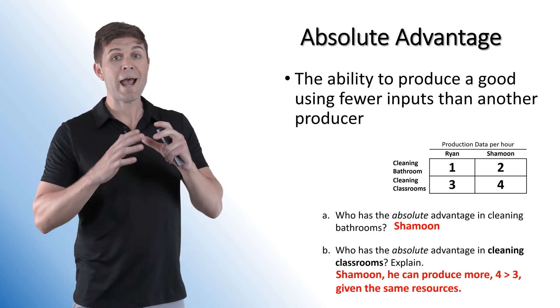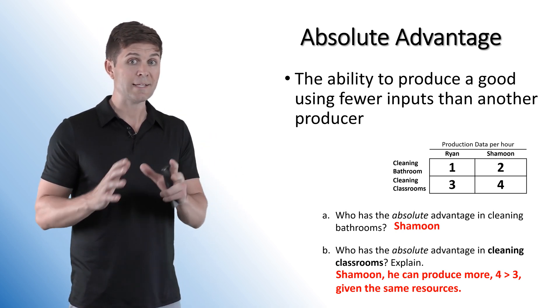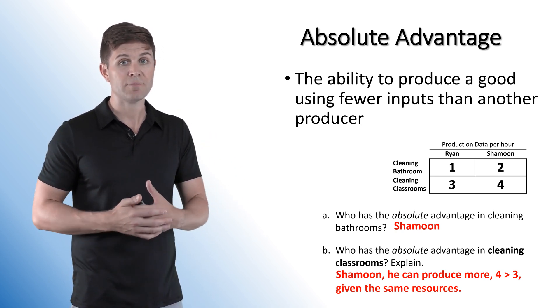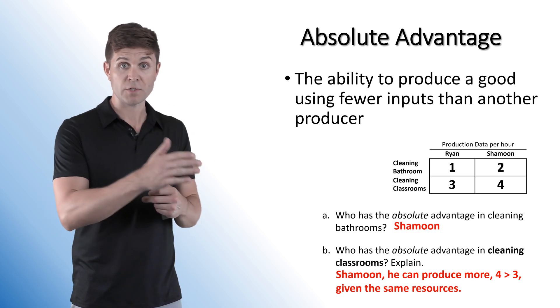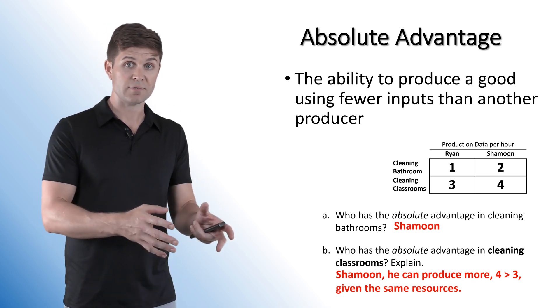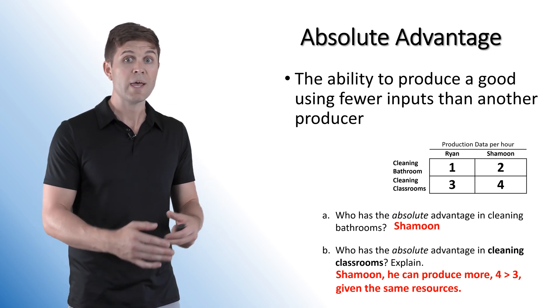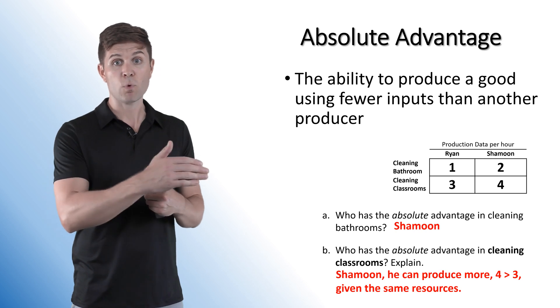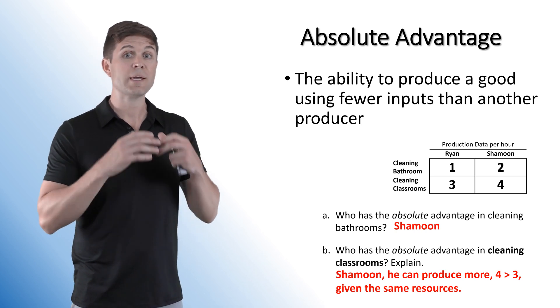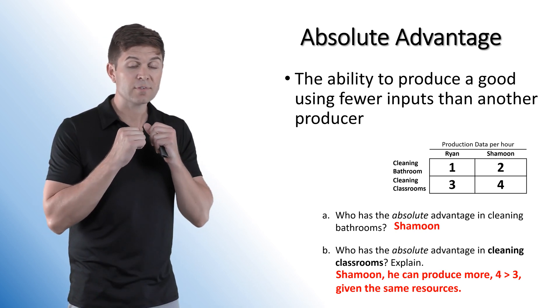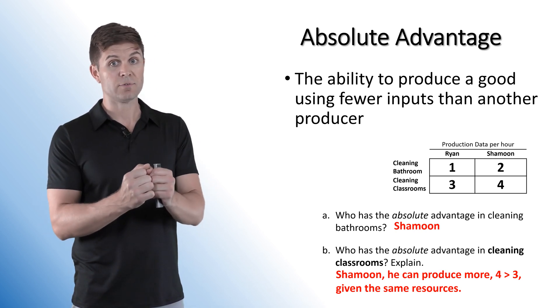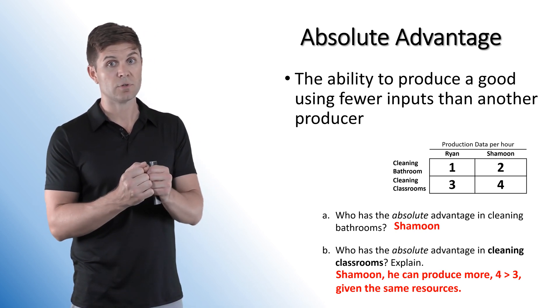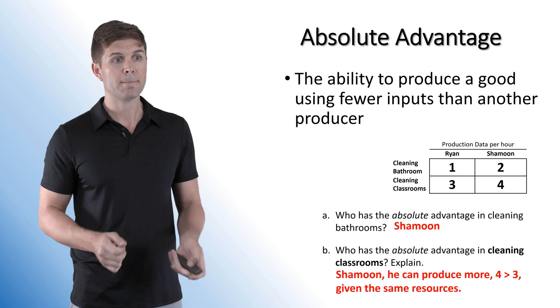When asked to explain this, you simply state that one can do more than the other given the same resources. Adding that four is greater than three solidifies your answer and guarantees you'll get it right.